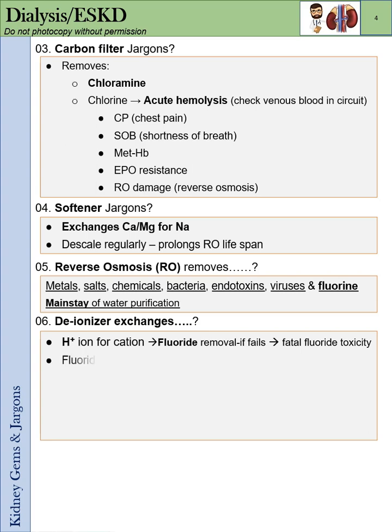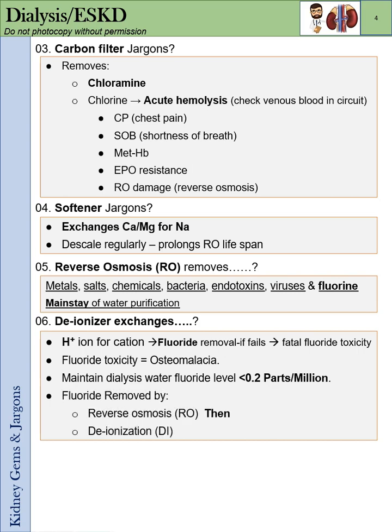The deionizer exchanges hydrogen ions for cations, causing fluoride removal. If it fails, it causes fatal fluoride toxicity. Fluoride toxicity causes osteomalacia. You have to maintain the water fluoride level at less than 0.2 parts per million. Fluoride is removed first by RO, then by deionization.